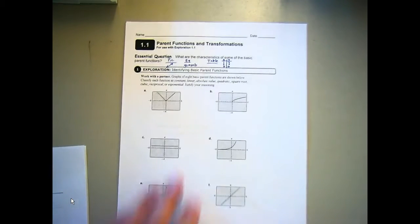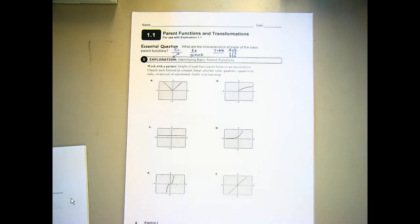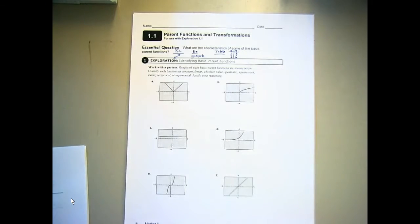From our last meeting you should have picked or worked through this in your student journal. From parent functions and transformations, this is page 2 of your student journal. So what I want you to do right now is compare what you came up with for each of these graphs. You're supposed to classify them as linear, absolute value, parabola, square root, cubic, reciprocal, or exponential. And explain why you picked that. Go ahead and do that right now. Share with your neighbors.